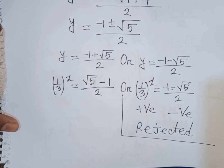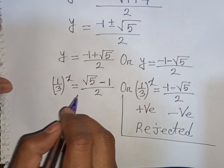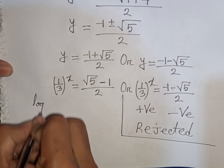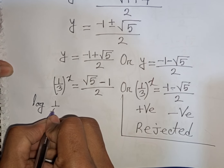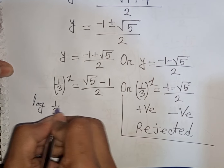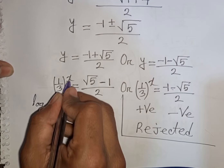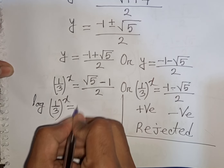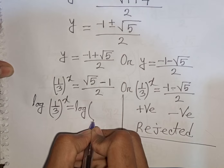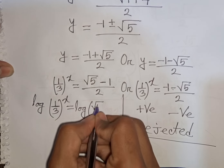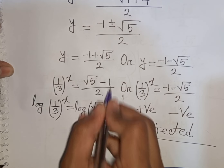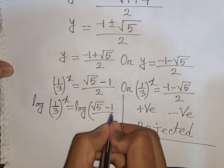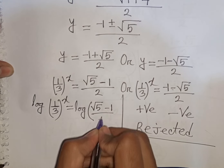From the valid case, we take log of both sides: log((1/3)^x) = log((√5 − 1) / 2).